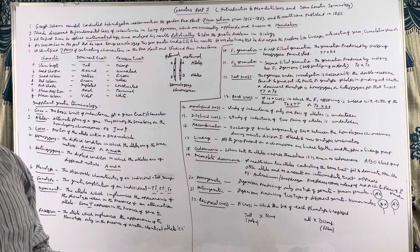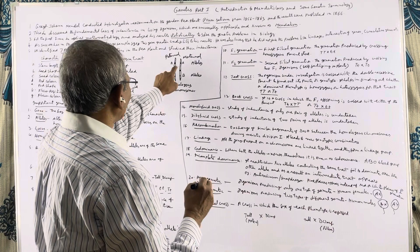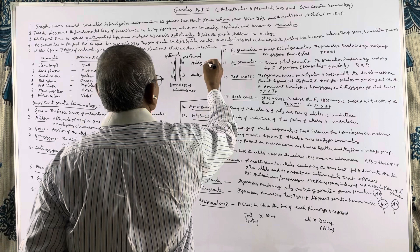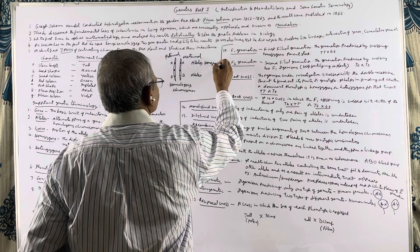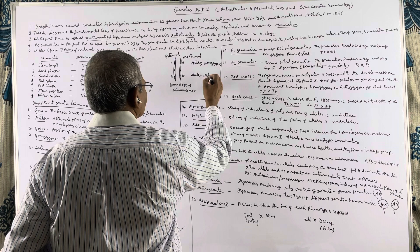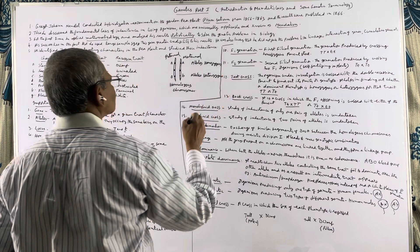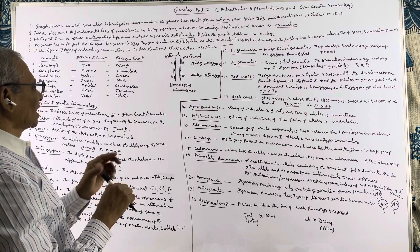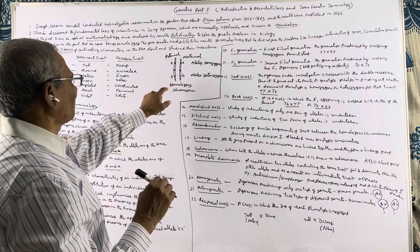We have to learn two more terms. If the alleles are the same or identical, we call them homozygous alleles. If the alleles are different — for example capital A and small a — these are known as heterozygous. One is a dominant gene and one is recessive. So alleles are the alternate forms of the same gene, and they occupy the same locus on the homologous chromosomes.